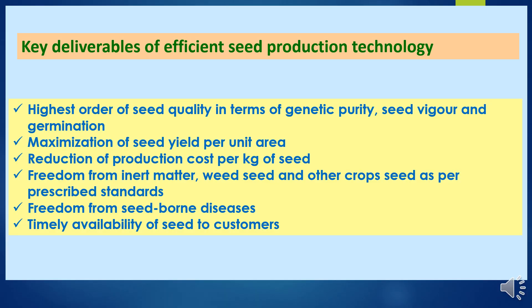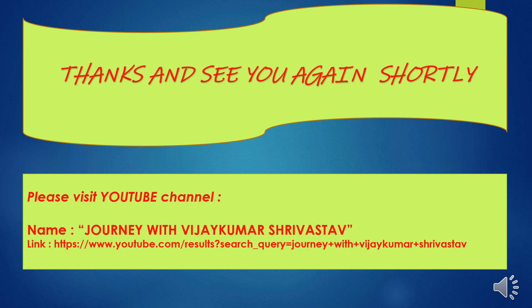As a final outcome, the key deliverables of efficient hybrid seed production are to produce the highest order of seed quality in terms of genetic purity, seed vigor, and germination; maximize hybrid seed yield per unit area; reduce production cost per kg of seed; ensure seed is free from inert matter, weed seeds, and other crop seeds as per prescribed standards; ensure freedom from seed-borne diseases; and ensure timely availability to the customer. This presentation on agronomic principles in hybrid seed production now comes to an end. See you shortly with a new topic. Thanks.